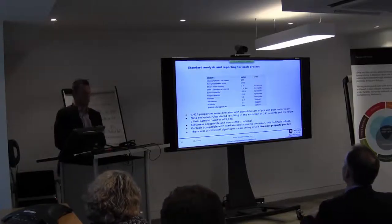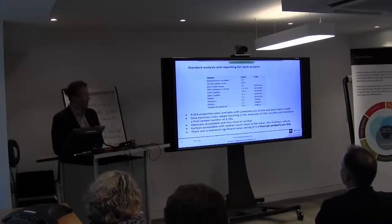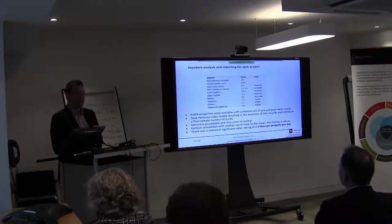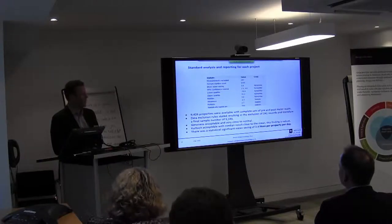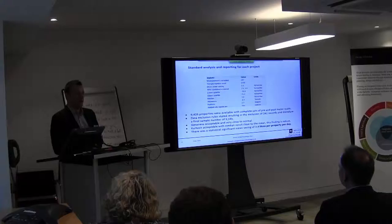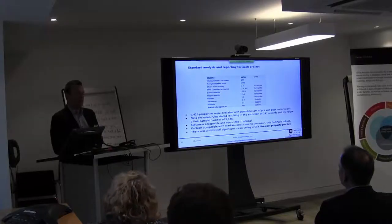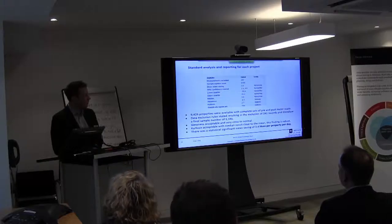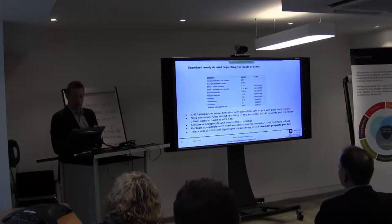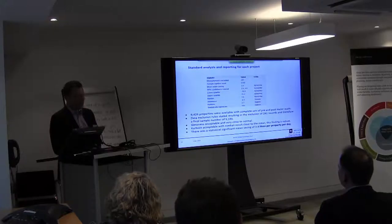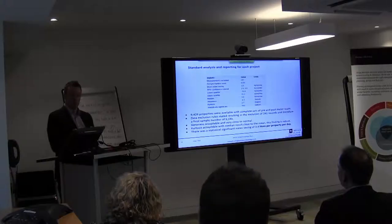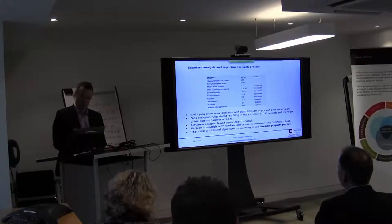We tested for normality, which is necessary when using the statistical tests we use. The T-test requires an assumption of normal or near-normal data, so we used skewness and kurtosis to test for normality, and then presented a range of descriptive statistics. We then undertook the T-test to determine whether the savings observed were statistically significant or not.